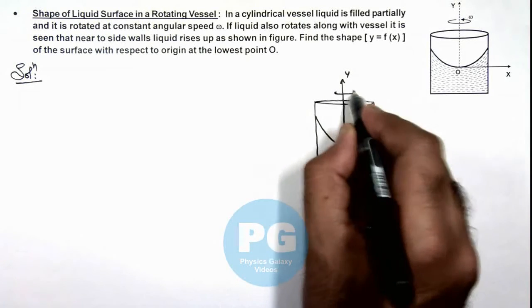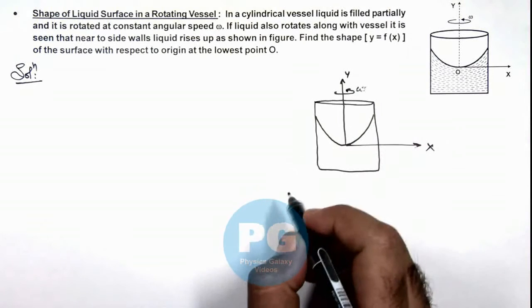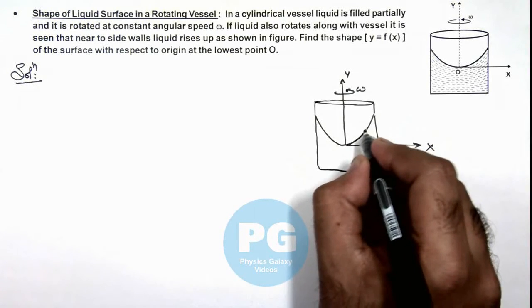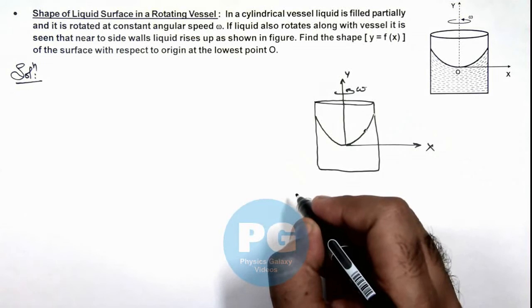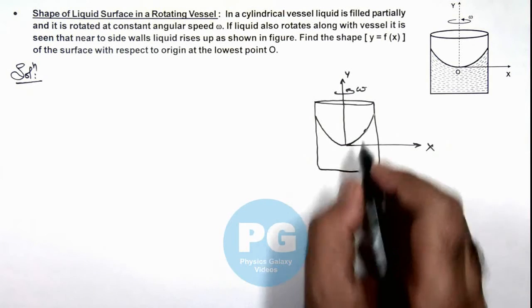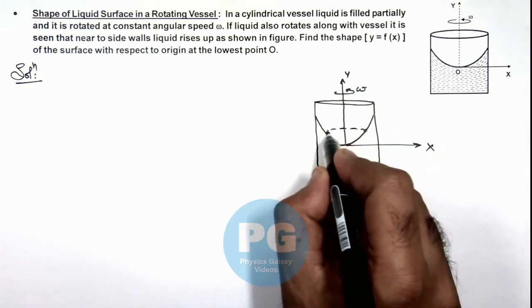And the vessel is rotating at angular speed omega. Now if I consider a particle on the surface of this liquid, it'll be revolving in a circular path.